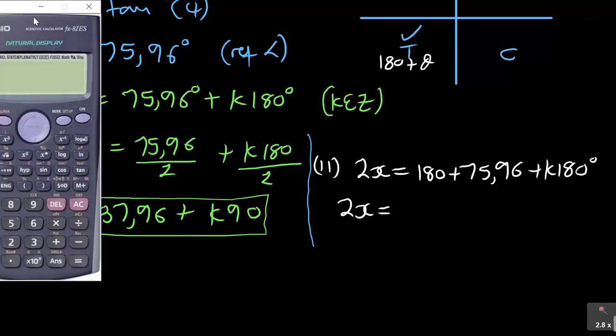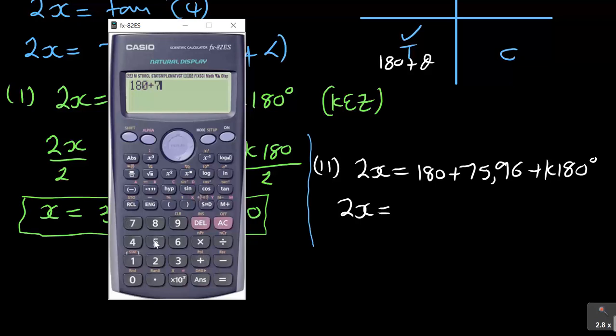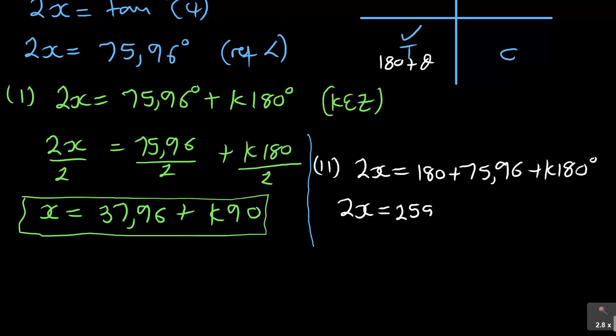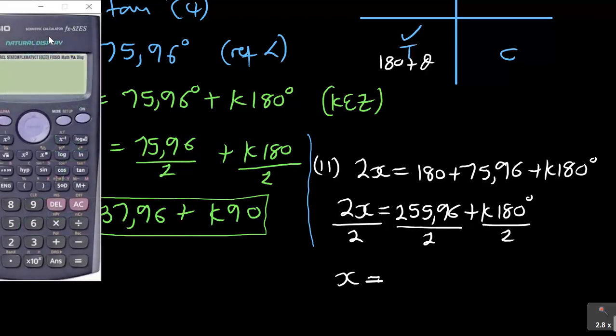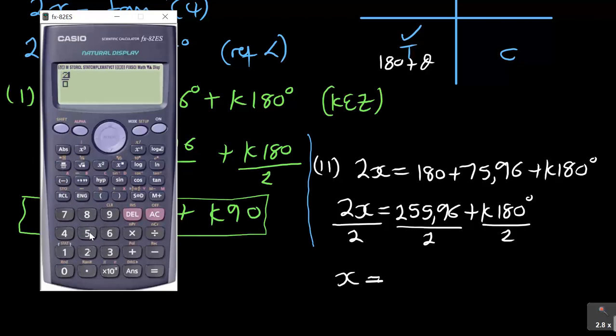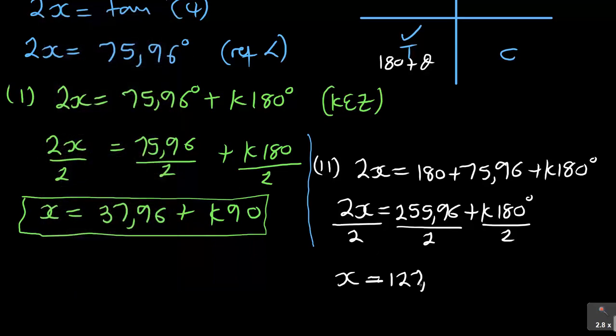This is in the third quadrant, and you've got 2x is equal to, now, when you add that 180 plus 75.96, it is going to give us 255.96. So that's what I have, 255.96 plus K 180 degrees. Again, divide, in this case, you're going to divide by 2, divide by 2, each one by 2. So you've got x is equal to 255.96, and then I'm dividing it by 2. So it becomes 127.98, again, is plus K 90 degrees.